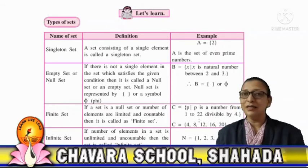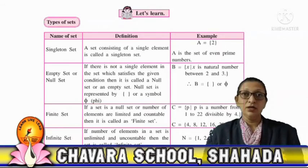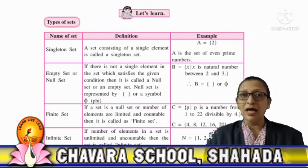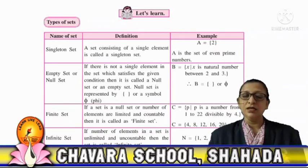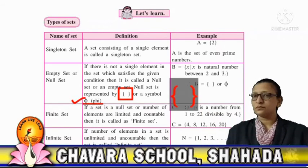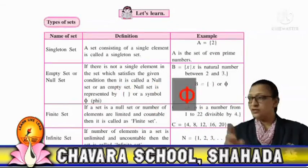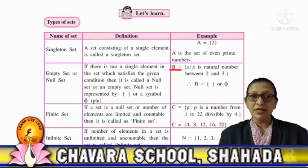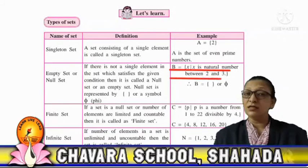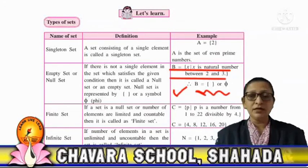Second, empty set or null set: if there is not a single element which can satisfy the given condition, then such a set is called an empty set or a null set. The symbol representing a null set is ∅. For example, B is the set of all x such that x is a natural number between 2 and 3. B is an empty set.